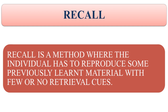Recall is of two types: free recall and serial recall. Free recall is recollection of ideas in a list without serial order. Memory for free recall is always better if subjects are not asked to recall in serial order. Free recall is affected by the primacy and recency effects. Primacy effects occur when a subject is able to recall items present at the starting point of the list, and recency effects occur when a subject is able to recall items present at the end of the list.